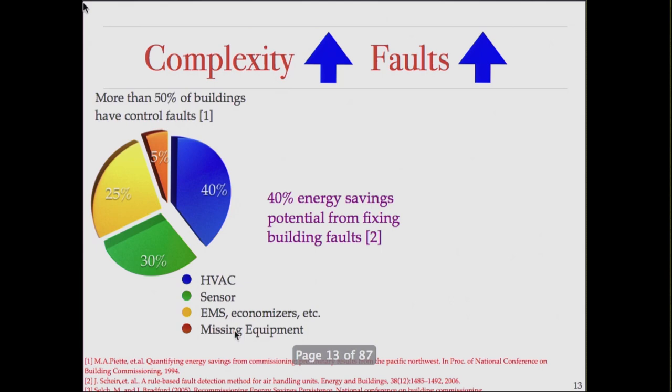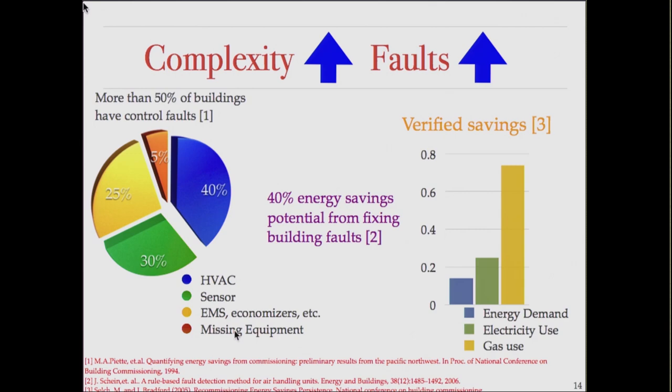If 40% of commercial energy is consumed in buildings and they could use 40% less, simple experiments where people actually tried to fix faults showed you can get verified energy savings — that is, show that by fixing faults in buildings, you can save a large amount of energy. So who wouldn't want to do that?